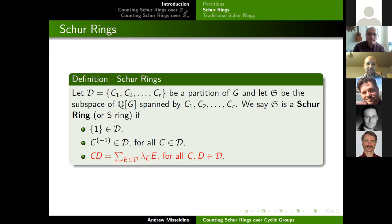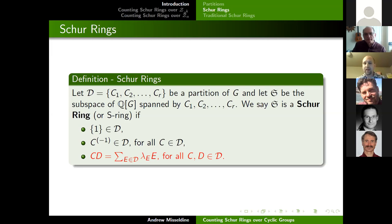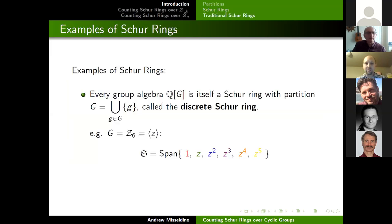When you look at these three axioms, you can see that the axioms of a Schur ring very much mimic the axioms of a group: we have an identity, an inverse-like object, and closure under multiplication. So these partitions of the group in many ways act like group-like objects, making this a very natural type of partition to study.